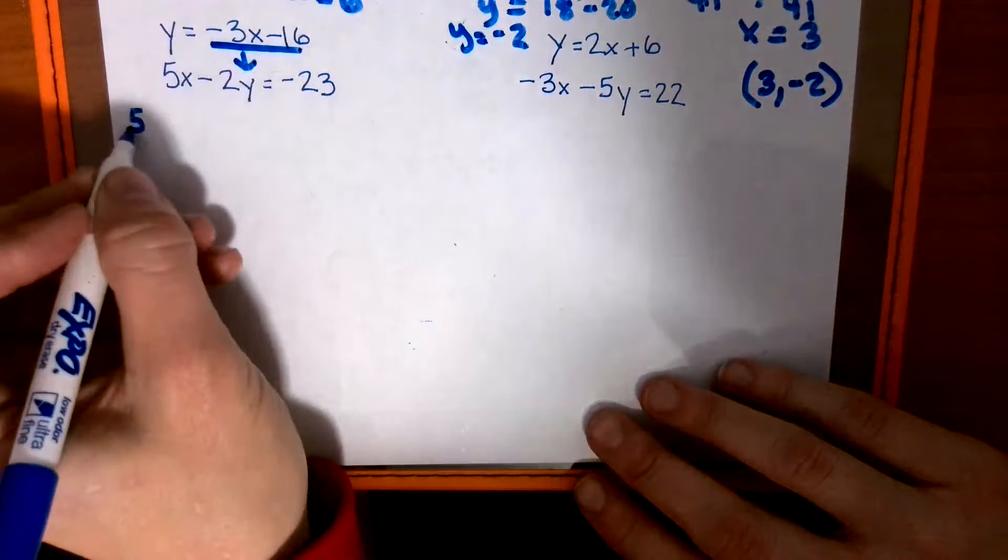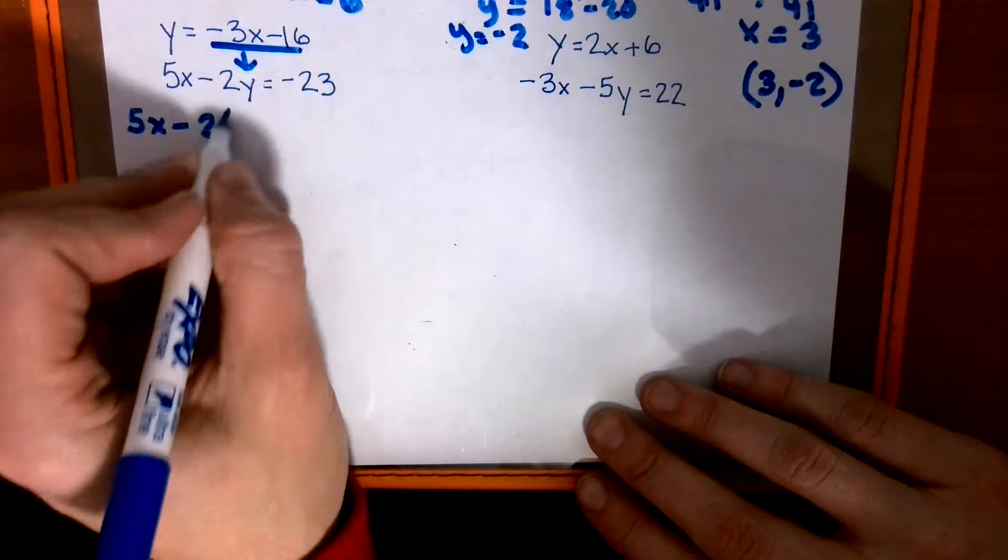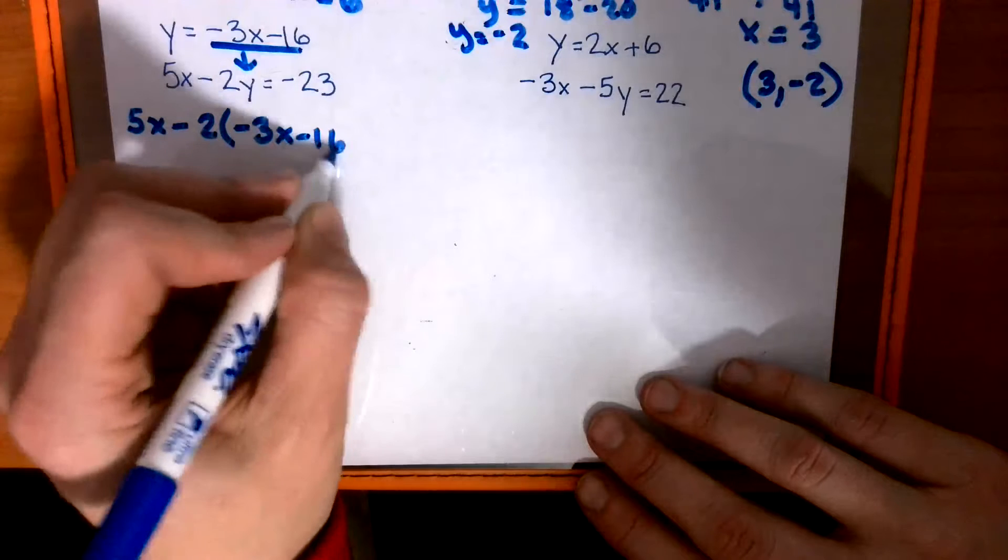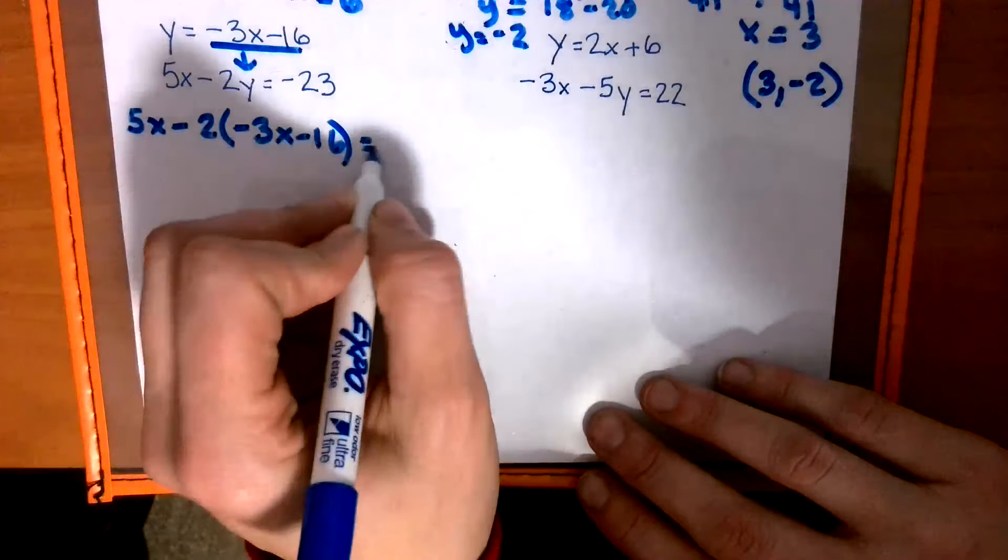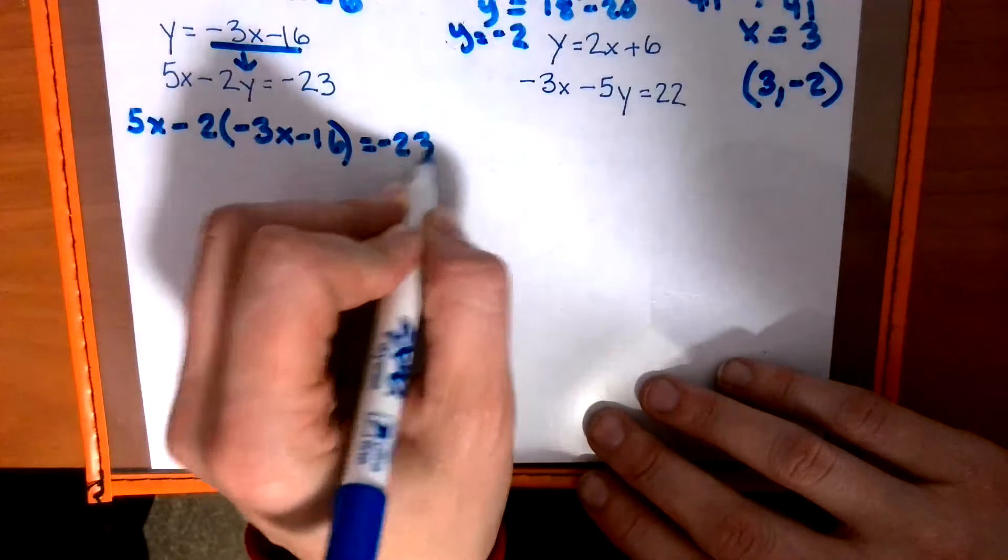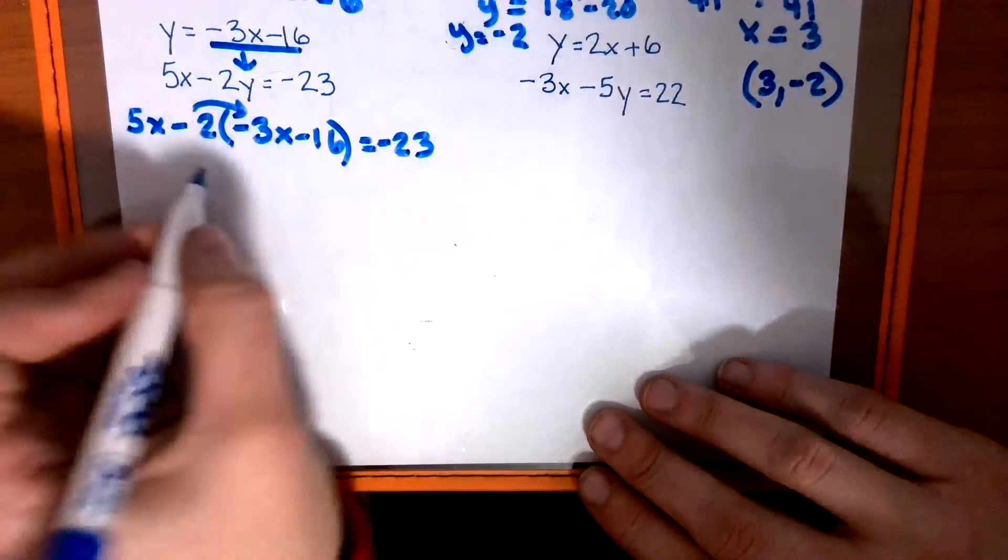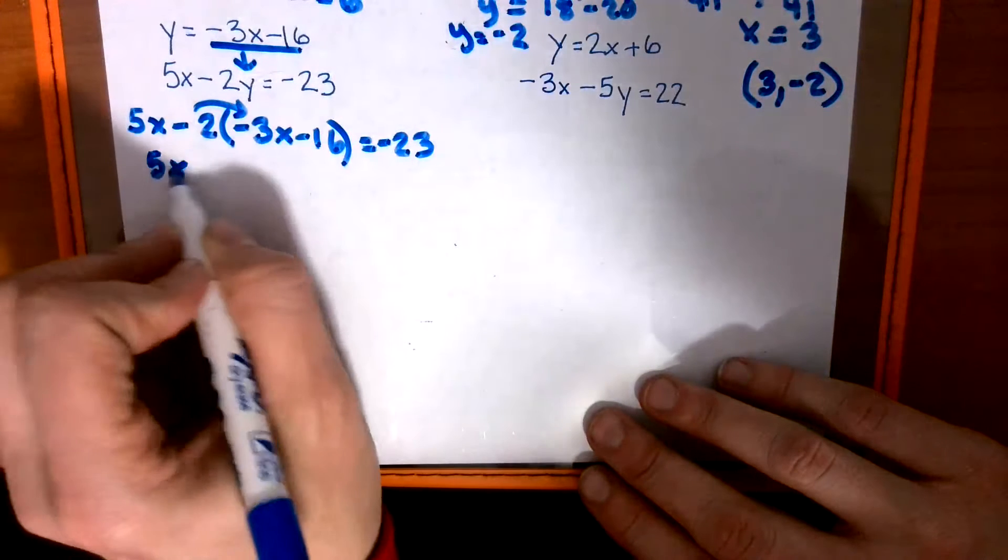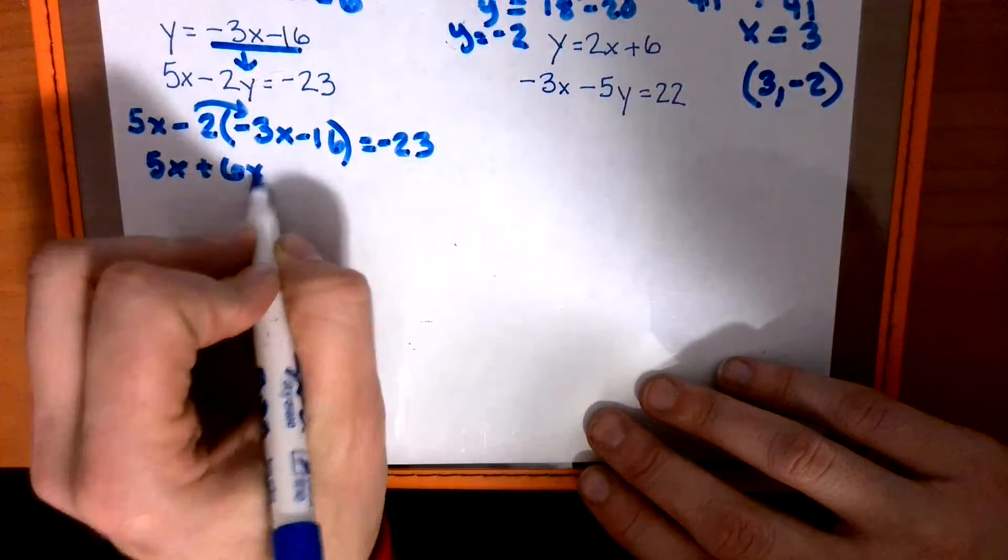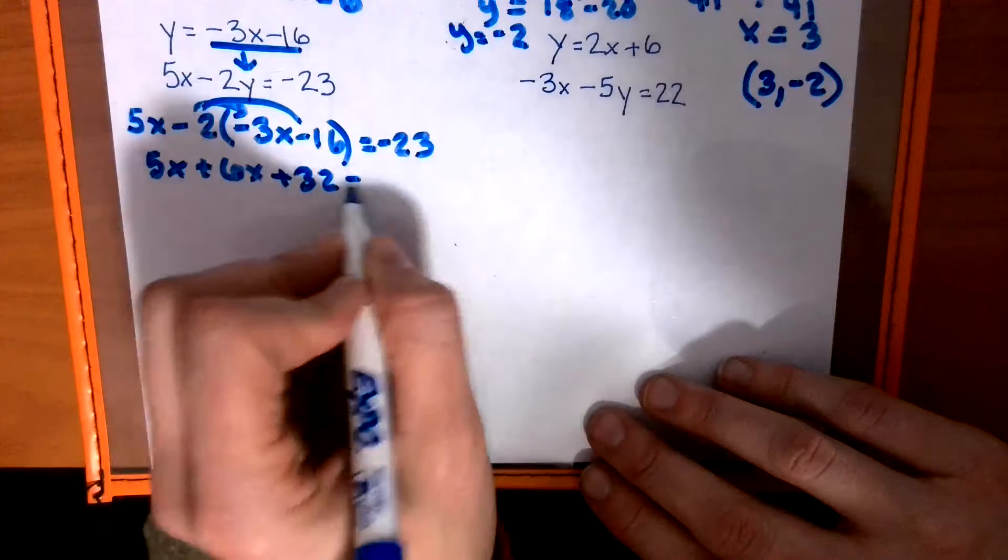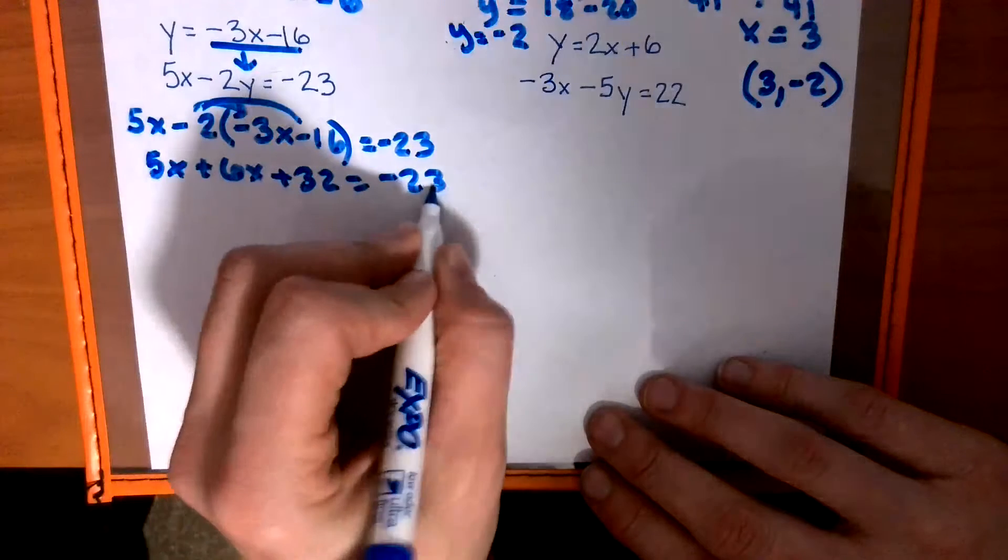So I rewrite 5x minus 2, parentheses, negative 3x minus 16, parentheses, equals negative 23. Watch these signs. Negative negative forms positive. So we have 5x plus 6x negative times a negative is a positive 32 equals negative 23.